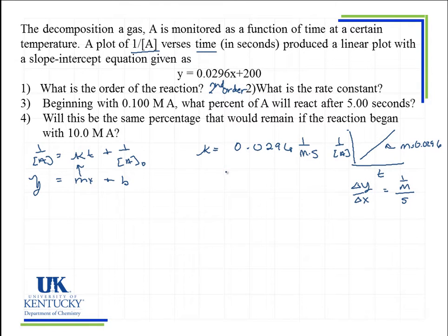So now we've answered part two. Part three tells me that the initial concentration of A is 0.1. So we can use our equation to calculate A at that time, because what we want to know is what percent reacted after five seconds. So if we knew how much was remaining, we'll be able to get the percent that reacted. So we will plug in our K of 0.0296, we will put in our time of five seconds, and we will put 1 over our initial concentration.